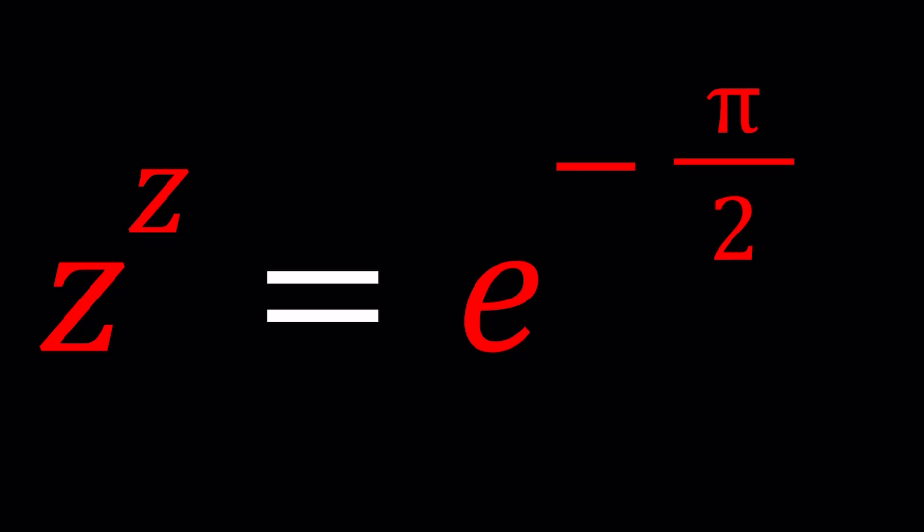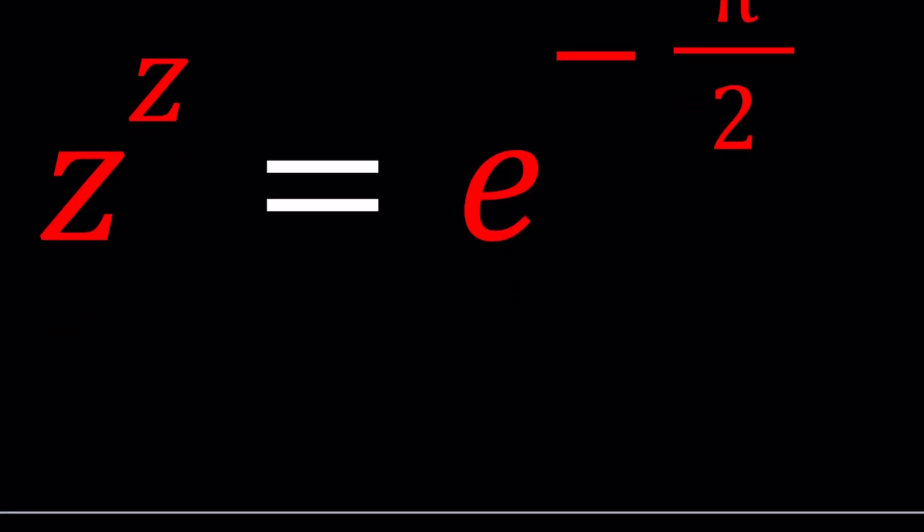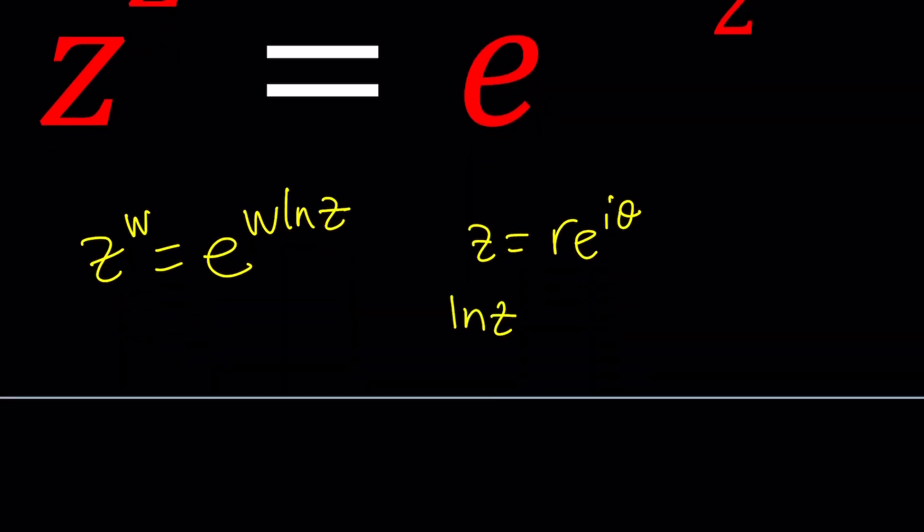In most books, complex exponentiation, maybe in all complex analysis books, z to the power w is defined as e to the power w ln z because ln z is well defined. And as you know, if z can be written as r e to the i theta, then ln z can basically be written as ln r, which is the real log, plus i theta which is i times the argument.